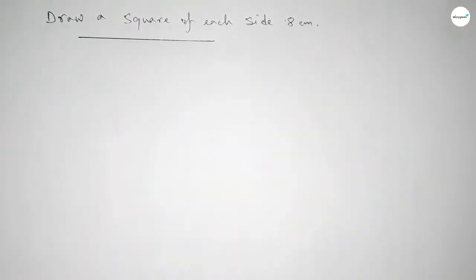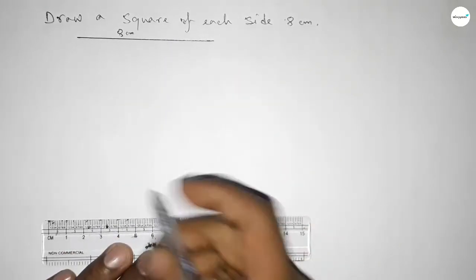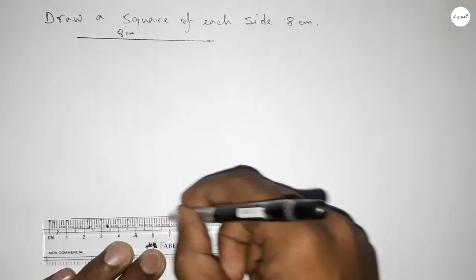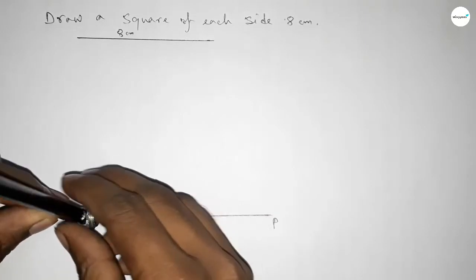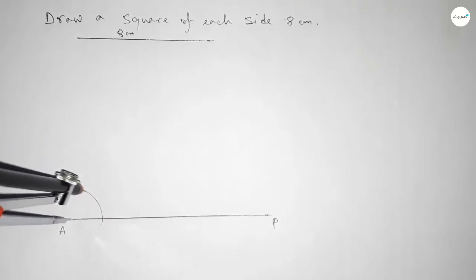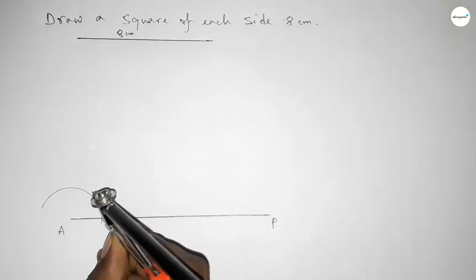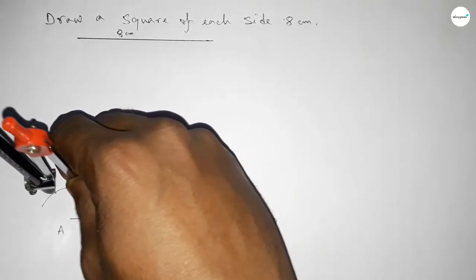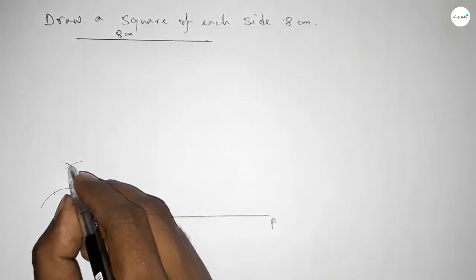This is 8 centimeter length. Now drawing here a straight line of any length, taking here A and here B. Now we have to draw a 90 degree angle on the point A. So putting the compass on the point A, taking any length, and drawing an arc. With the same length, putting the compass here and cutting here, then cutting here again. Drawing arc here with same length, putting the compass here and cutting here, so both curves intersect at a point.